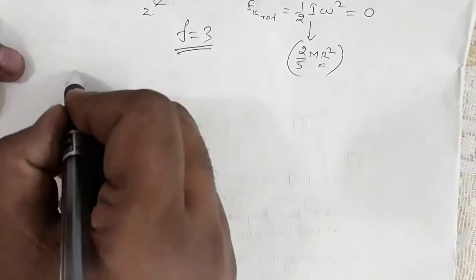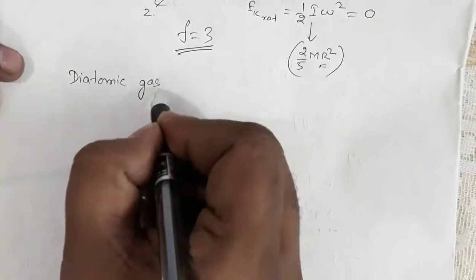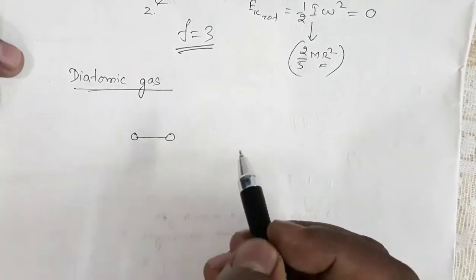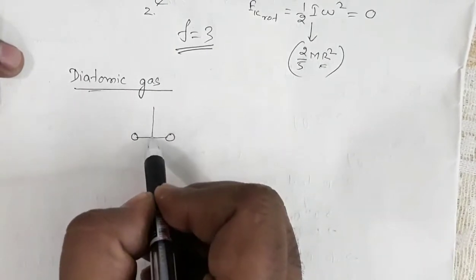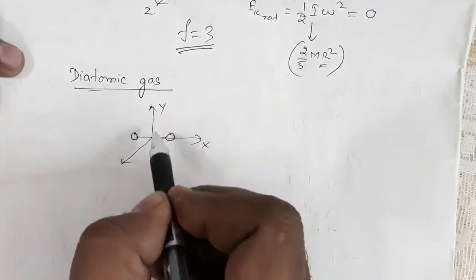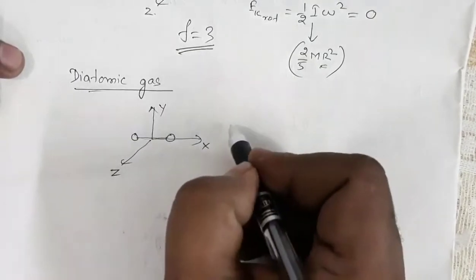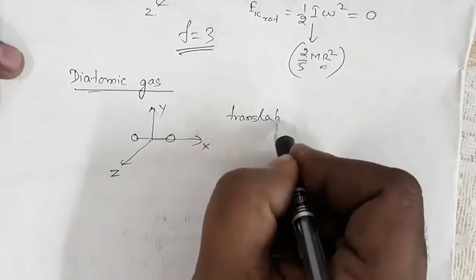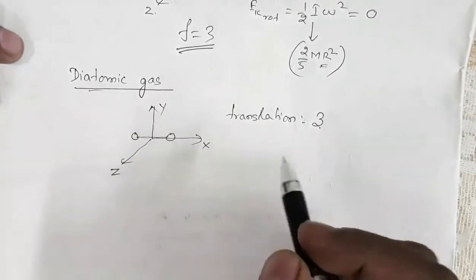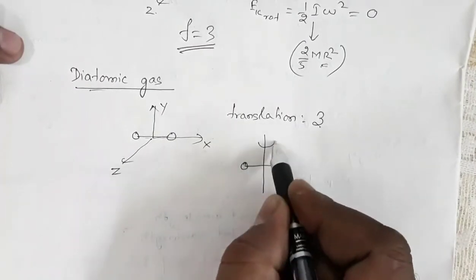Now let's see for a diatomic gas molecule. Again, corresponding to translation, this molecule can translate along the x-axis, along the y-axis, and along the z-axis — so again three degrees of freedom. Now if we consider rotation for this particular molecule, rotating along one axis gives one degree of freedom.